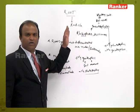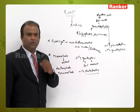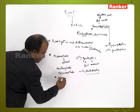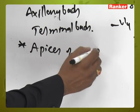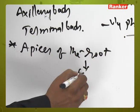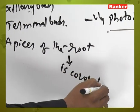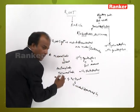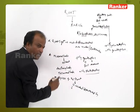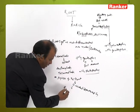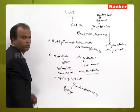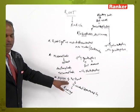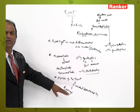Another characteristic feature of the root system: the apex of the root is covered or protected by a thimble-like structure known as the root cap. The root cap always covers and protects the root apex.